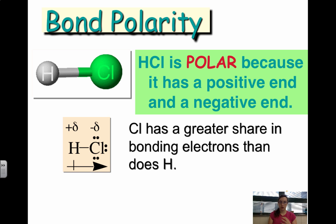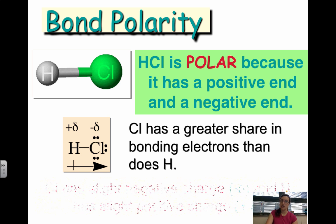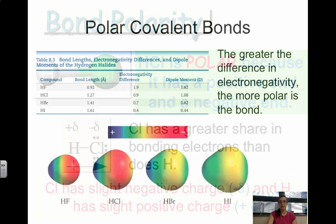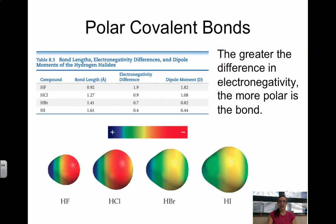So chlorine has a greater share in the bonding electrons. The electrons are more attracted toward chlorine than hydrogen, giving chlorine the slight negative charge, and hydrogen the slightly positive charge. So like I mentioned before, the greater the difference in electronegativity, the more polar the bond. So if you're looking at which bond is more polar, just look at electronegativity differences. If you have a difference of 0.9 and 1.5, the difference of 1.5, that bond is going to be more polar.